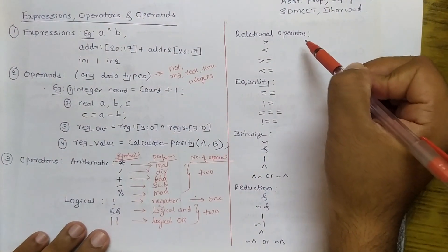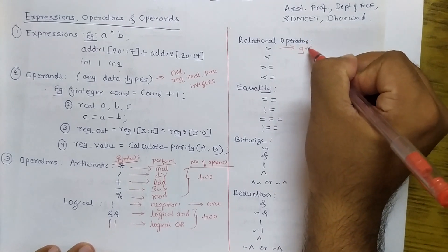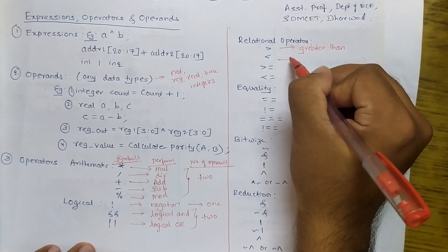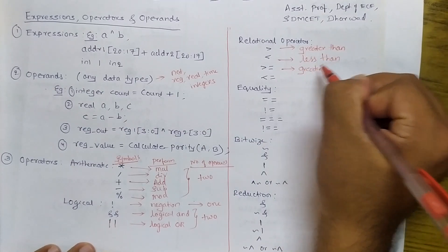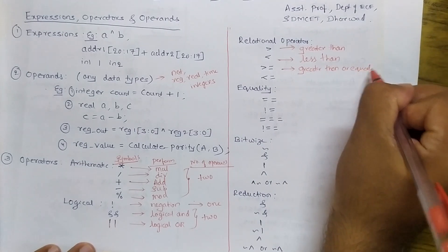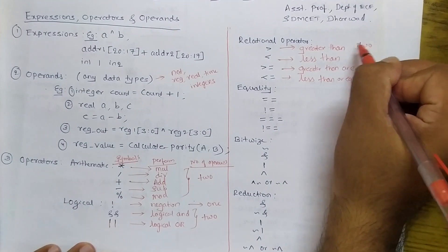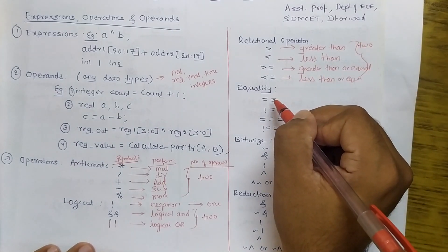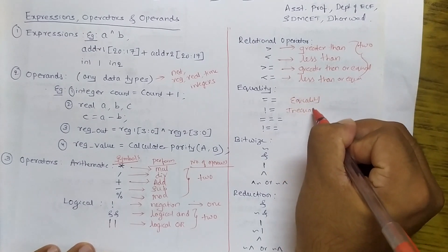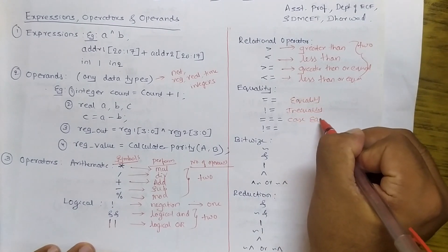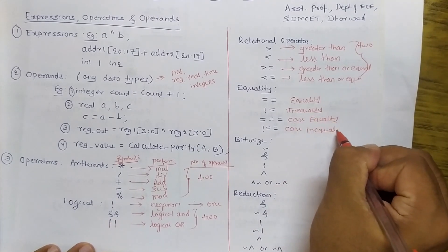Coming to relational operators, we have four different kinds: greater than, less than, greater than or equal to, and less than or equal to. For all of these, two operands are required. For the equality operator, we also have four kinds: double-equals to check equality, not-equals to check inequality, triple-equals for case equality, and exclamation-double-equals for case inequality. For all of these, two operands are needed.